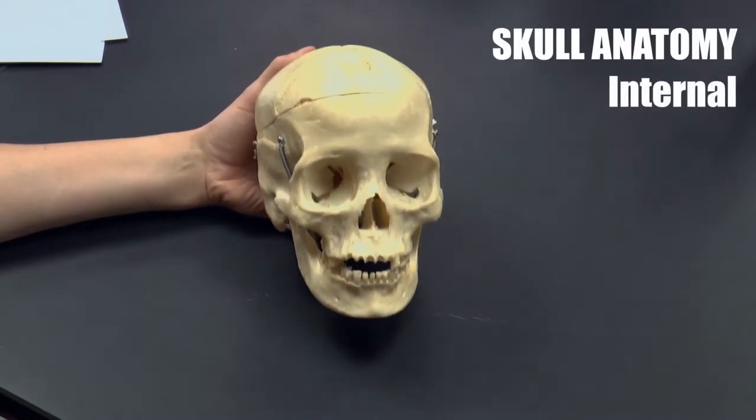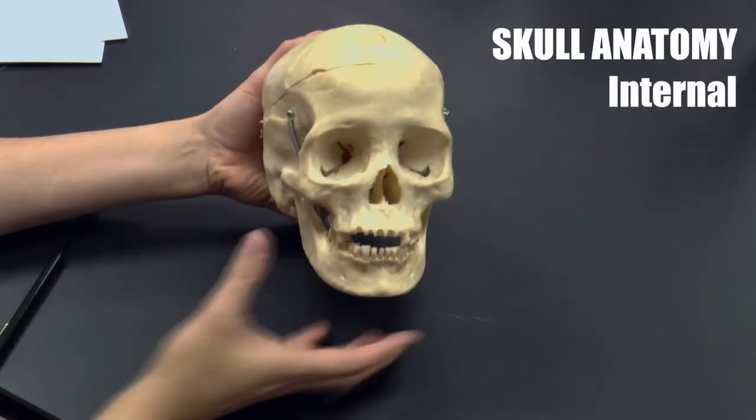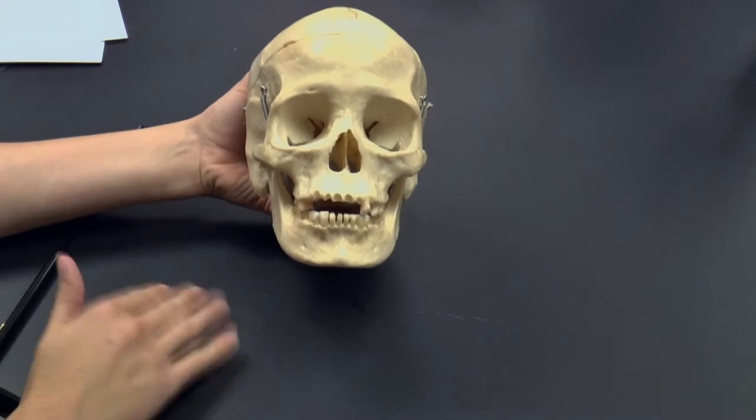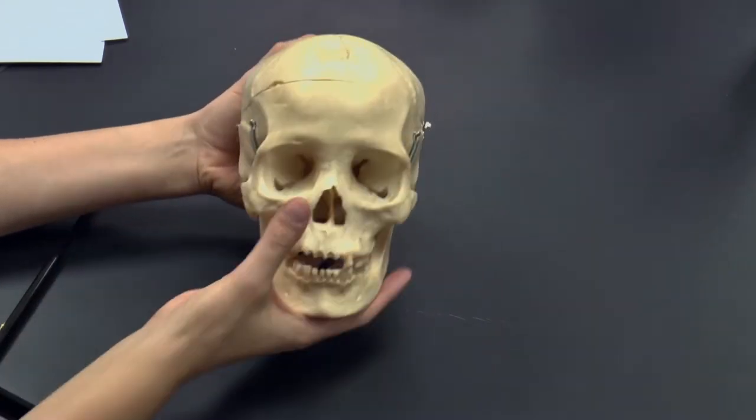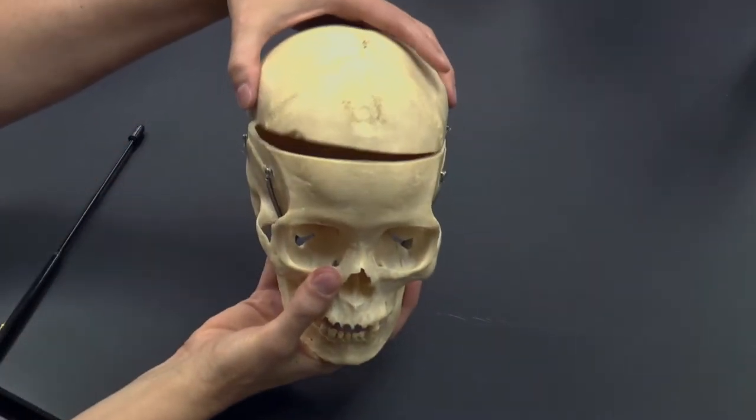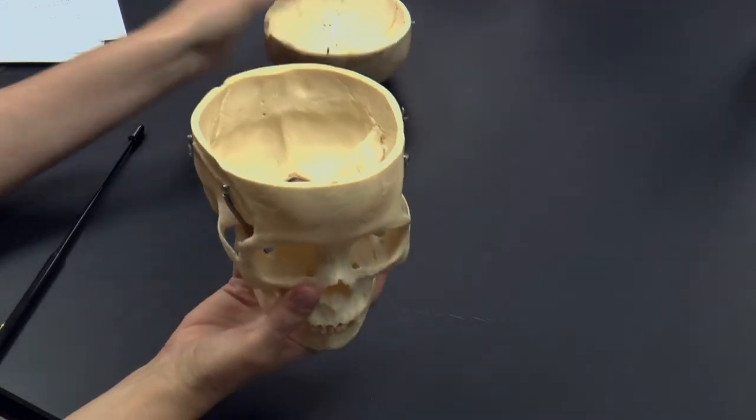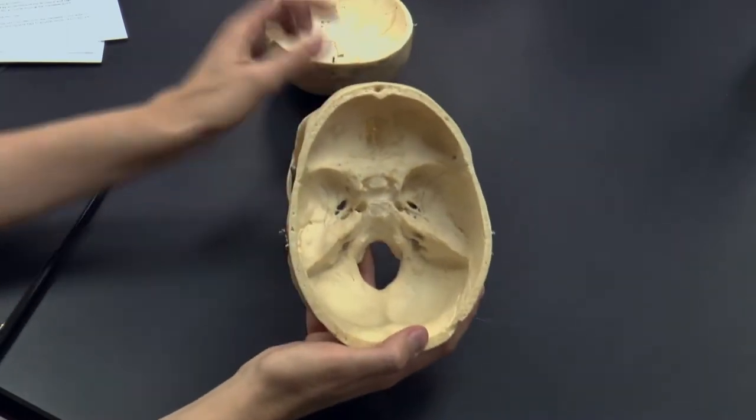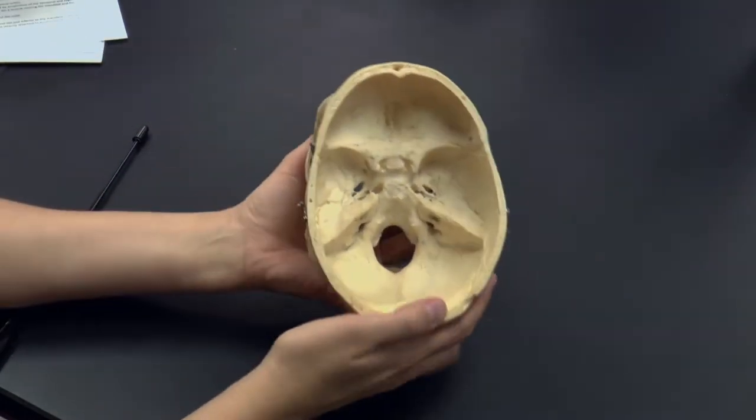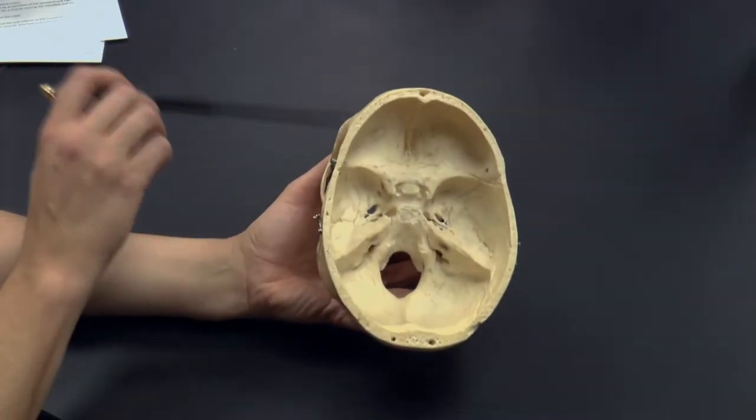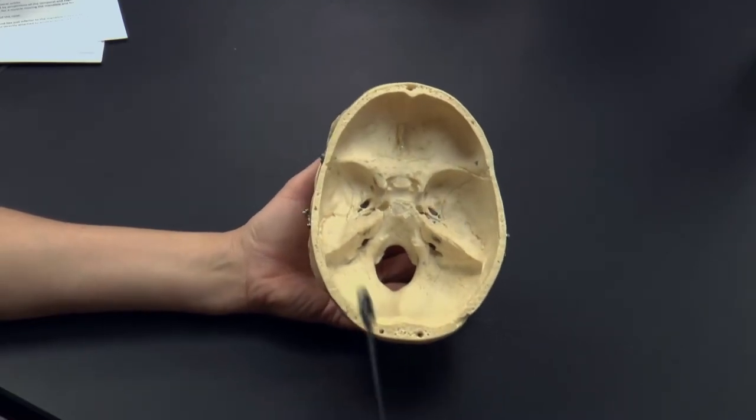We're going to look at the internal anatomy of the cranial case in this video. And so just to orient ourselves, here you can see the anterior view of the skull. We're just going to pop off the top of the cranial cavity so that we can see internal. I'm going to rotate the skull for you. So here's the anterior, here's his face, and so this is the front and the back.